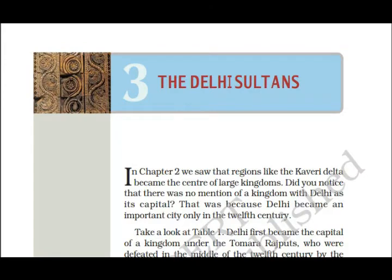Hello students, I am your SS teacher. Hope you all are good. In Class 7, we have completed two chapters of Social Science in History. Today I am going to start Chapter 3, and the chapter name is 'The Delhi Sultans.' In Chapter 2, we mainly studied about the Kaveri delta and the large kingdoms in the south. Did you notice that there was no mention of a kingdom with Delhi as its capital?